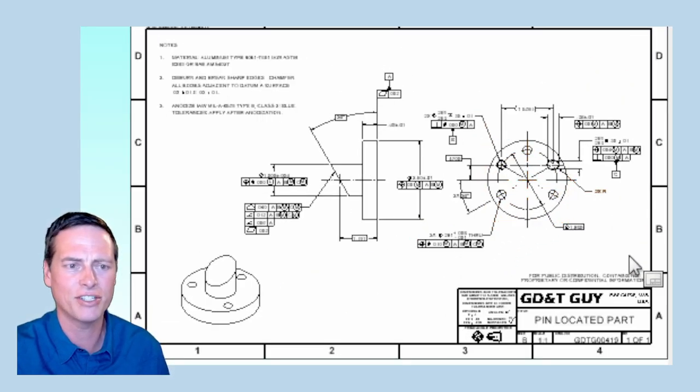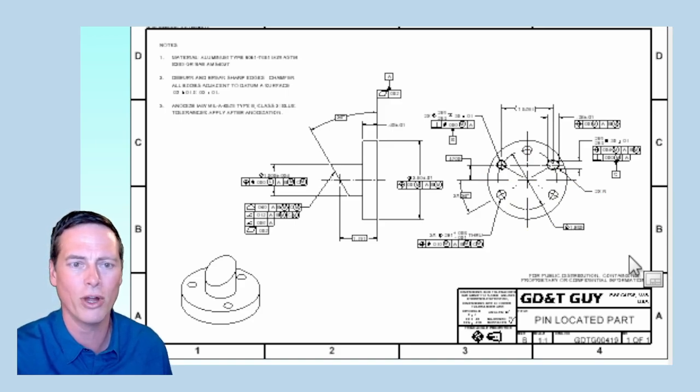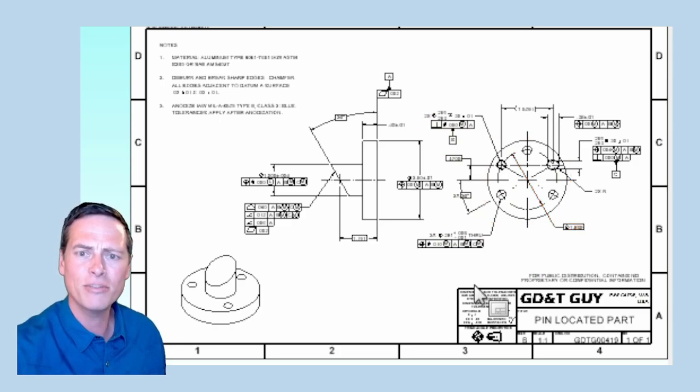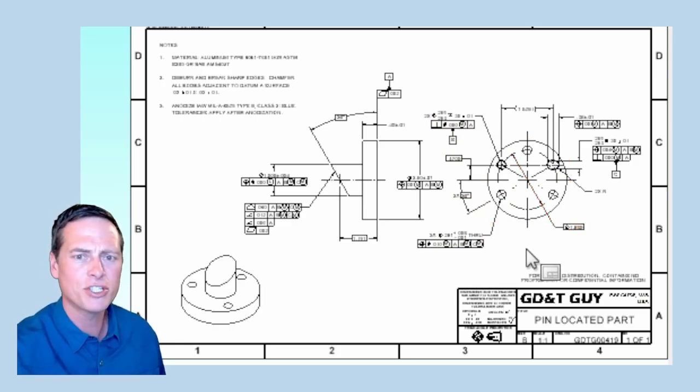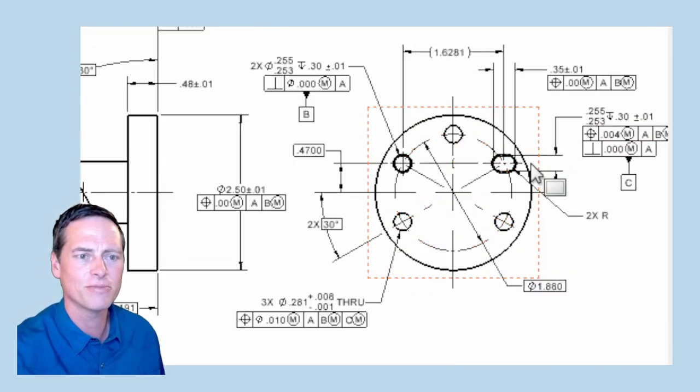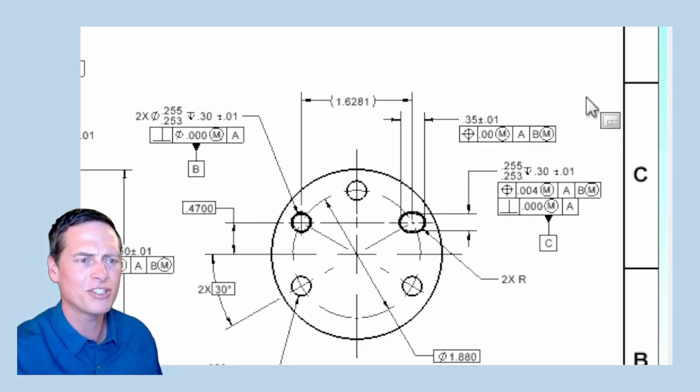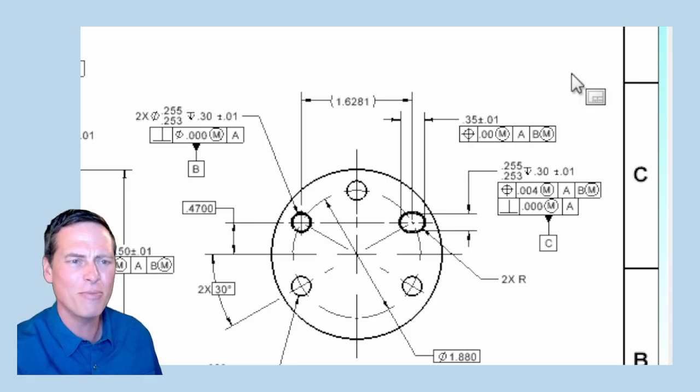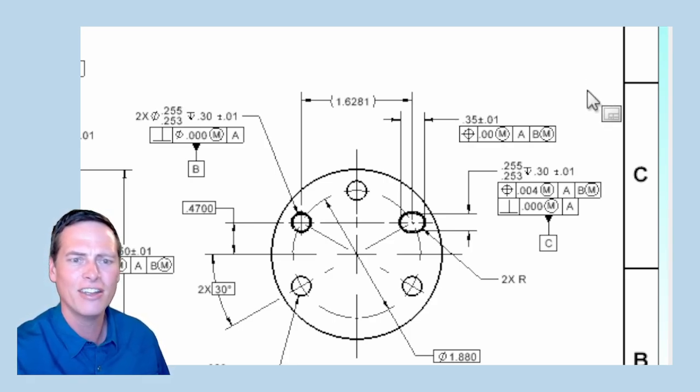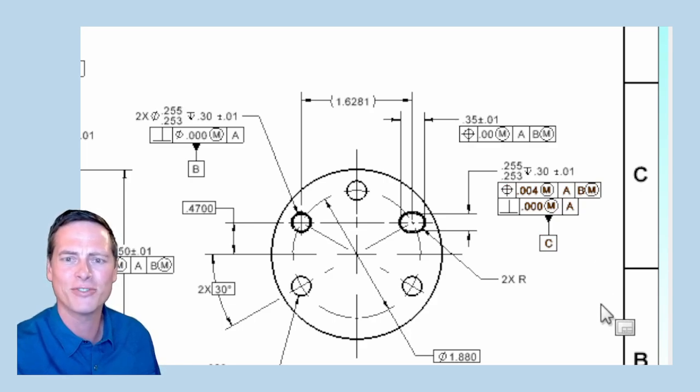All right, so now let's have a look at GDTG00419, which is the mating part. Here again, I've oriented my views pretty carefully to show the relationships between these features. You can see the datum C slot is oriented toward the datum B hole. A lot of this dimensioning is similar to the previous part, and there should be a number of by now familiar looking techniques for tolerancing the hole in the slot and then using them in a datum reference frame.